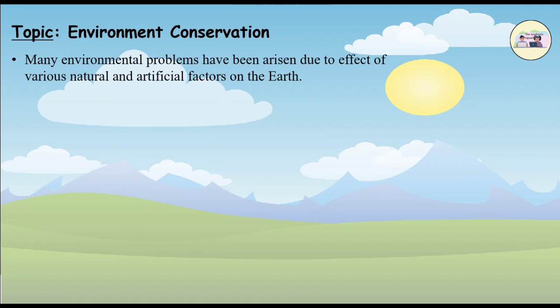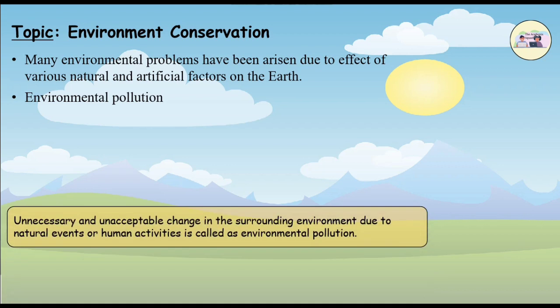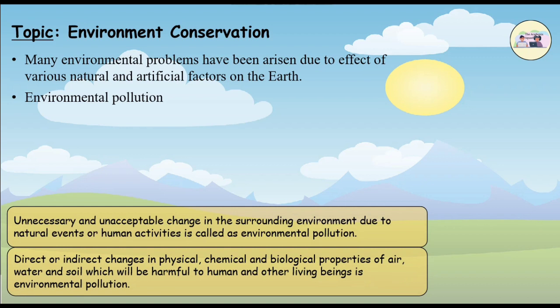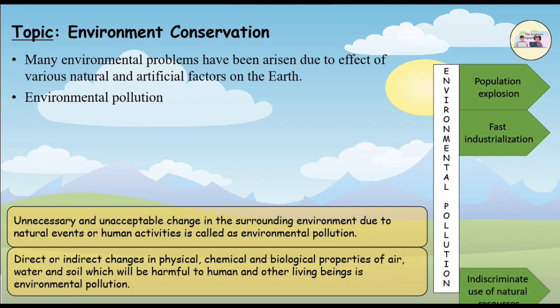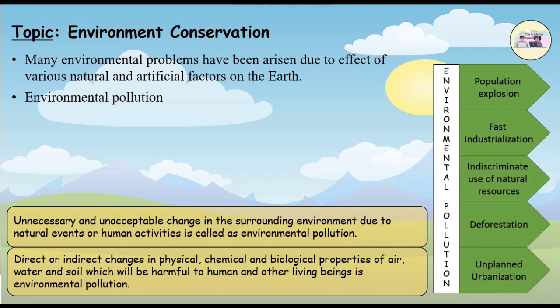At present, many environmental problems have been arising due to the effect of various natural and artificial factors on Earth. Environmental pollution is one of those main factors. Contamination of any material is its pollution. Unnecessary and unacceptable change in the surrounding environment due to natural events or human activities is called environmental pollution. Direct or indirect changes in the physical, chemical, and biological properties of air, water, and soil which are harmful to humans and other living beings constitute environmental pollution. Various reasons like population explosion, fast industrialization, indiscriminate use of natural resources, deforestation, and unplanned urbanization are responsible for environmental pollution.